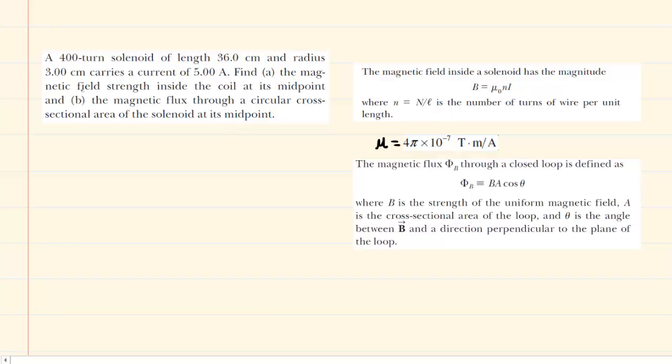In part A of the question, we are asked to determine the magnetic field strength inside the coil. The symbol for magnetic field strength is B, so this question is asking us for B.